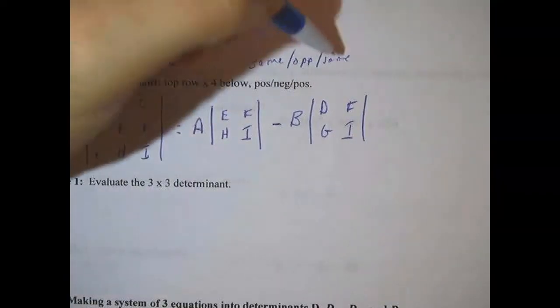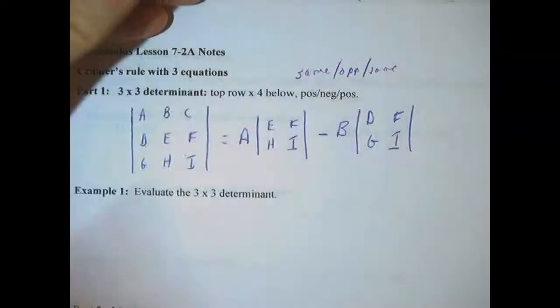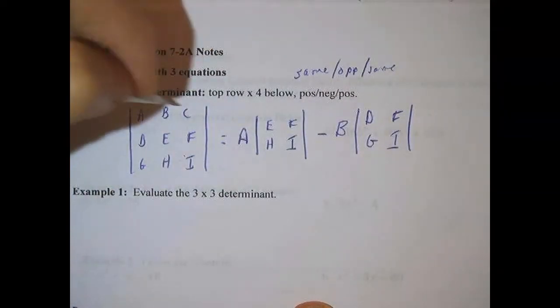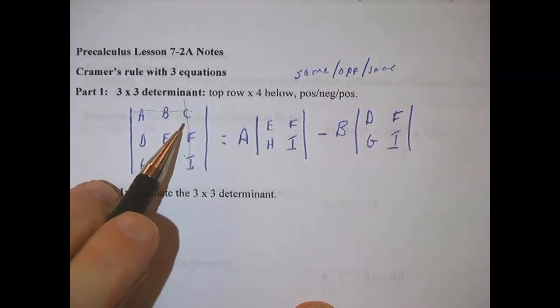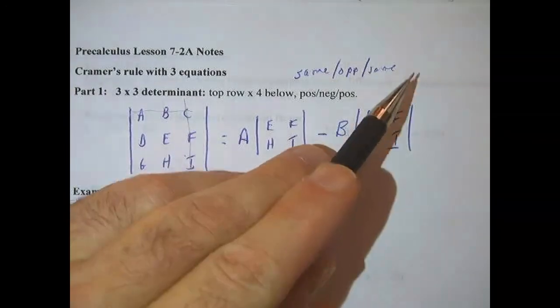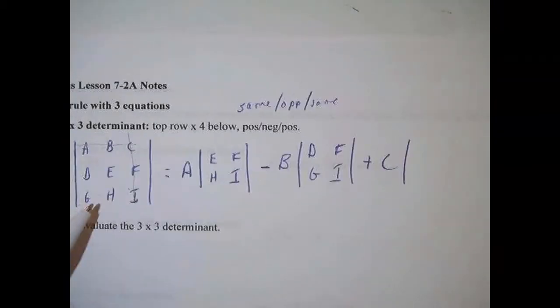And then same sign. So we do the same thing a third time. I'm going to put the lines through the C and that leaves me with the 2 by 2. So it's C times that 2 by 2. And we keep the same sign for C. So it's plus C times the 2 by 2 that's left over, DEGH.